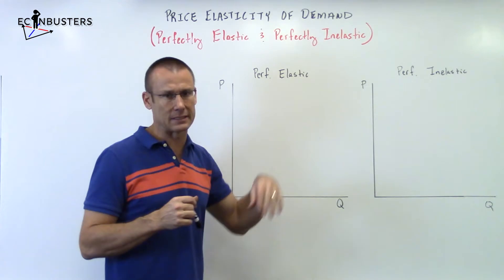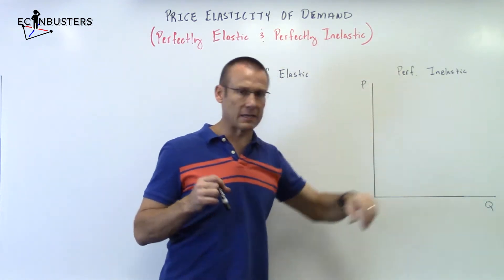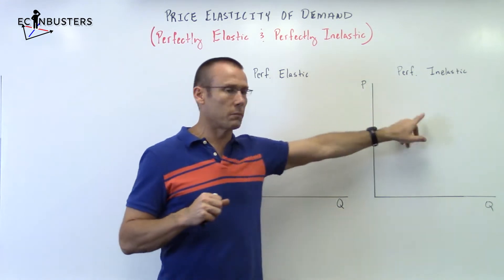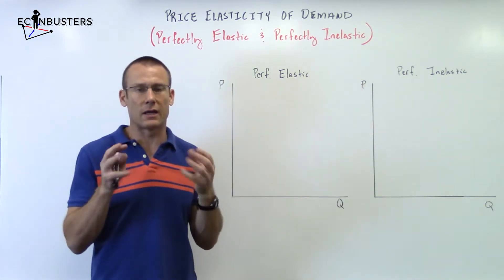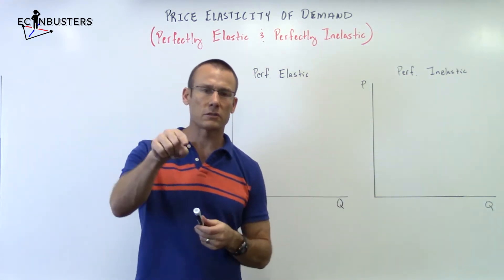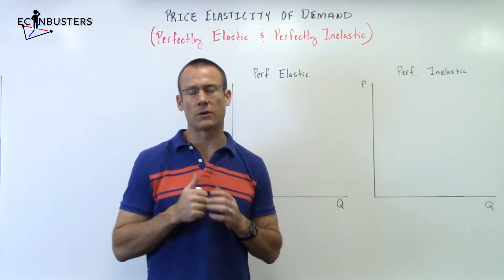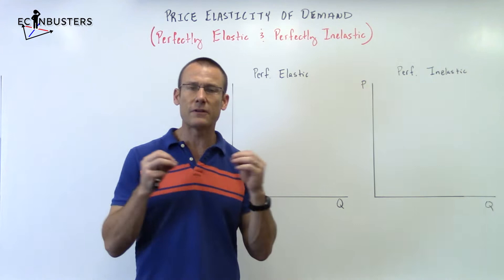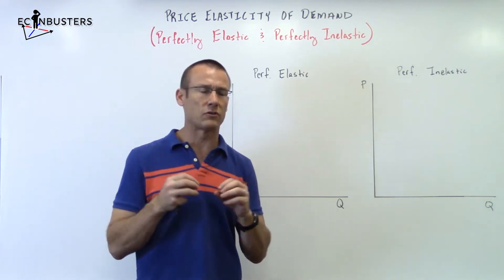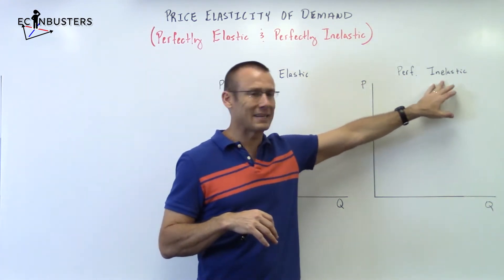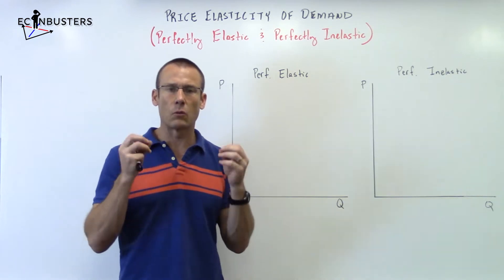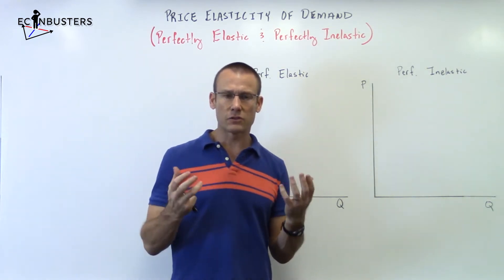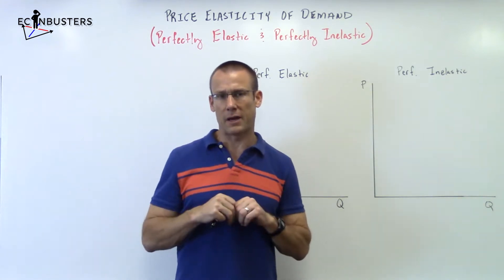Perfectly elastic, perfectly inelastic. I'm about to draw a demand curve on both of these graphs. Here's what I like to say — just pause the video and think for yourself. What would perfectly elastic look like, infinitely elastic to price changes? And then perfectly inelastic — what would that demand curve look like? Pause the video, give yourself a second, come up with it, then turn it back on.